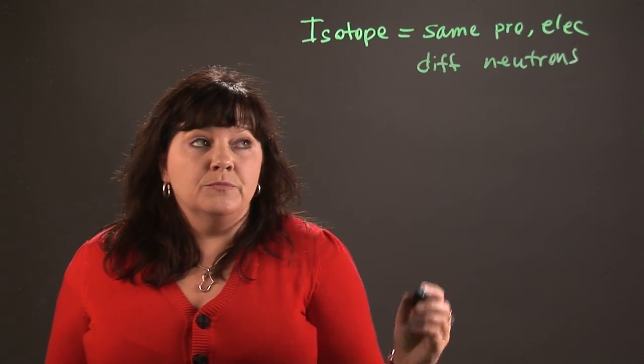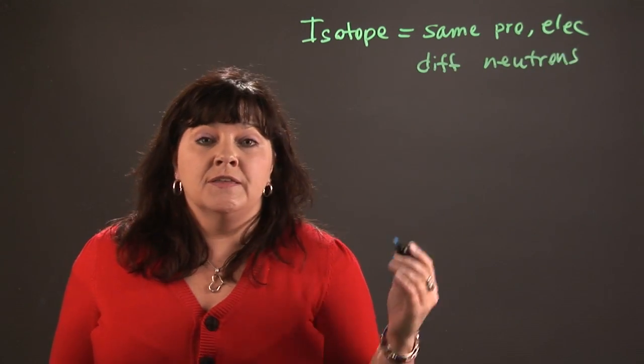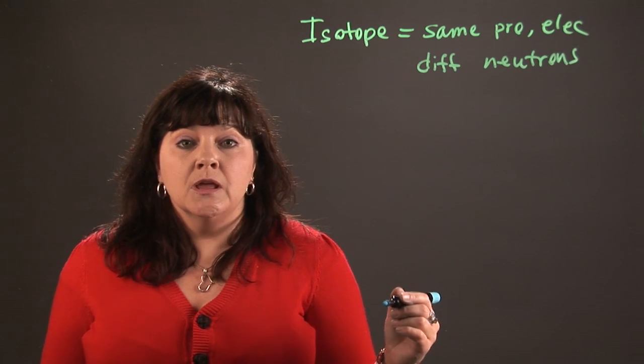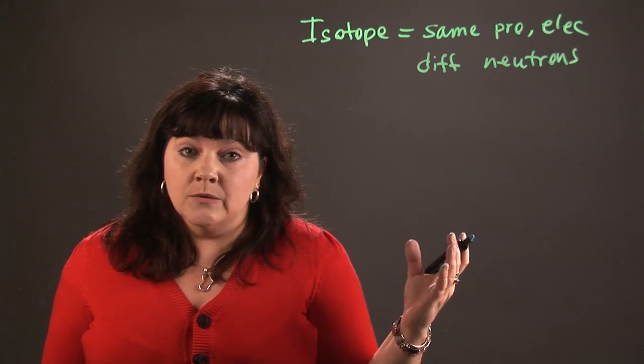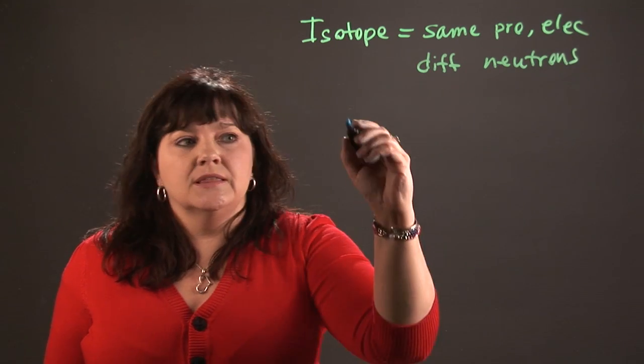That's important because the protons and the neutrons are going to be involved in the isotope calculations. So when you look at an element on a periodic table, say something like carbon.